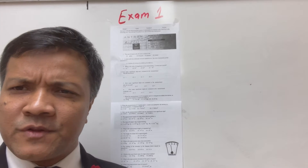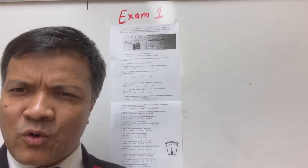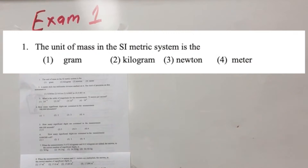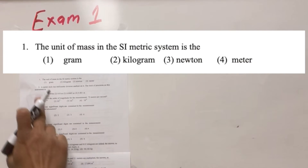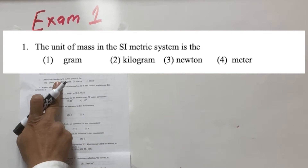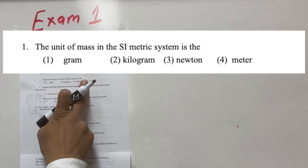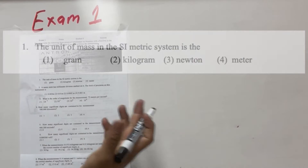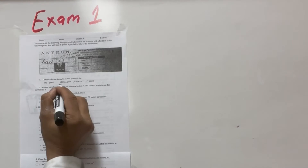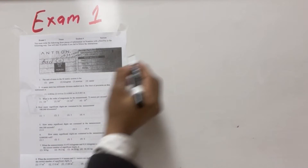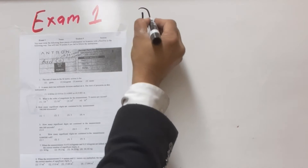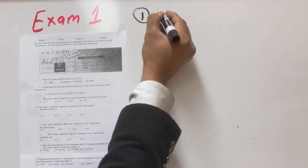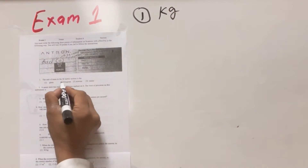In this tutorial I'm going to go over the physics exam one. Problem number one: the unit of mass in the SI metric system. The answer is of course kilogram — not gram, that would be chemistry. So the answer to question one is kilogram.